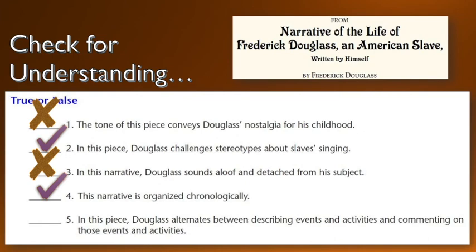Number four is true: all narratives are organized chronologically — even if there are flashbacks and flash-forwards, time (chronos) is the guiding principle for organization. Number five is also true: in this piece Douglass alternates between describing events and activities and then commenting on them. This isn't just a story — it's a story with the purpose of showing people the horrors of slavery. After Douglass tells us an incident from his childhood, he examines it and shows us how it caused harm. That's the end of this presentation — move on to your next activity, and if you have questions you can always find me on Schoology. Thanks.